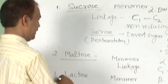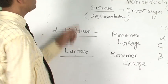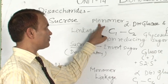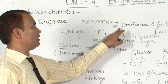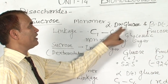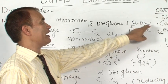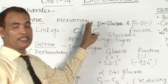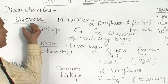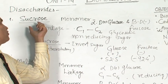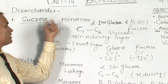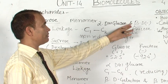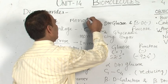Sucrose, maltose and lactose. Sucrose — the monomers of sucrose are alpha-D-glucose and beta-D-fructose. A common exam question is: what is the product obtained on hydrolysis of sucrose? The answer is alpha-D-glucose (D-plus-glucose) and beta-D-minus-fructose.